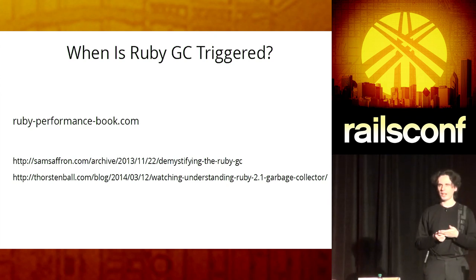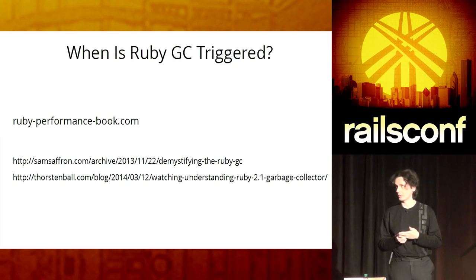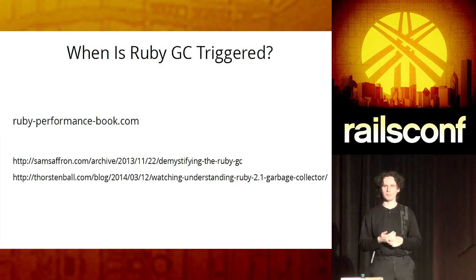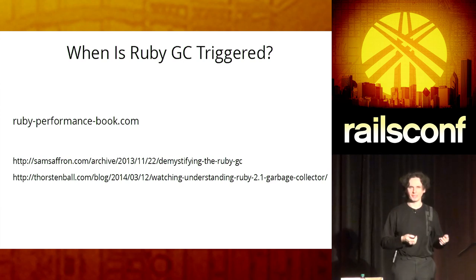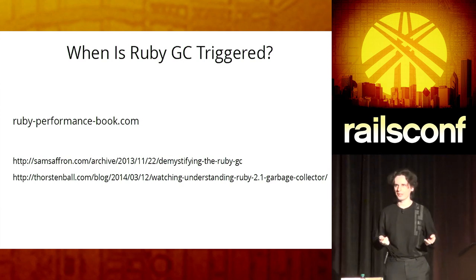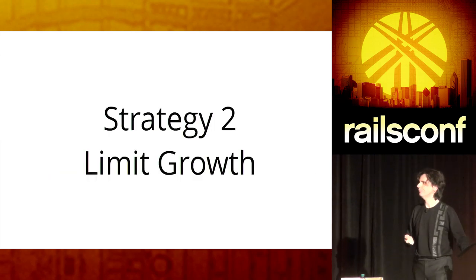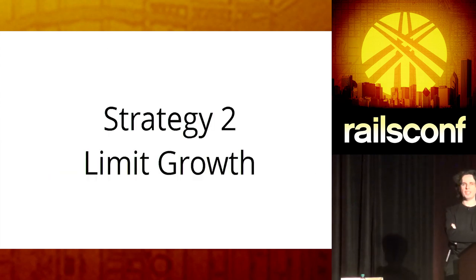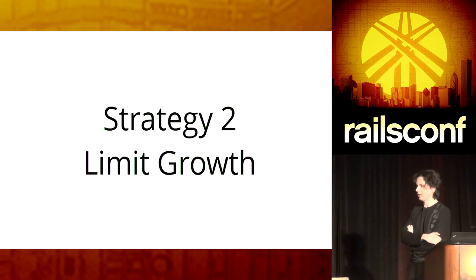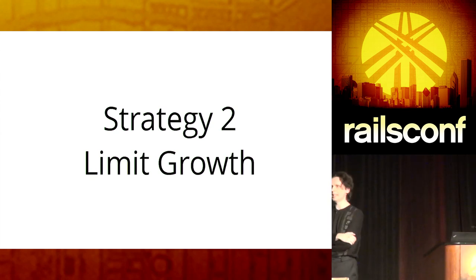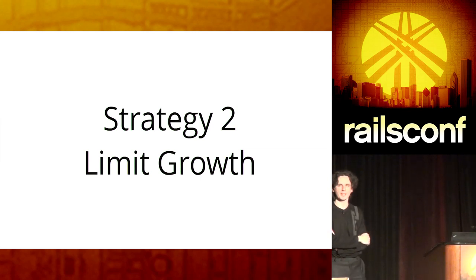The book is still not released. If you go to Ruby Performance Book, you can simply sign up for updates. I will be happy to share an alpha or beta version of the book with you once it's done. That was GC tuning. Now, the next strategy is to limit the growth of your Ruby processes.